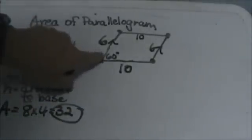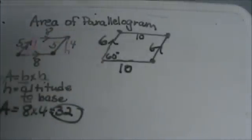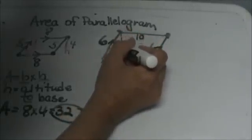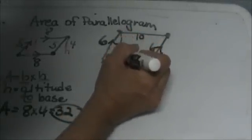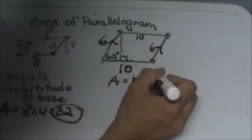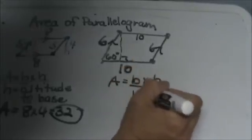But this time we are given an angle of 60 degrees. So when I drop my altitude down so I can figure out the actual height for my formula, because remember I need base and a height and an altitude is the height. I'm going to use 10 as my base, but I'm going to have to work a little harder to find this altitude or this height.